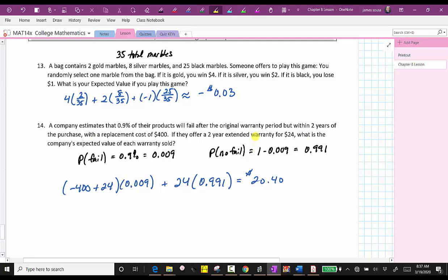One common mistake on this type of problem is forget that when the product fails, the outcome for the company is not just negative $400, because the customer still had to purchase the warranty to get the replacement, which is why this first outcome is negative 400 plus 24.